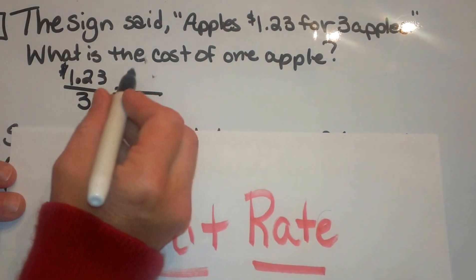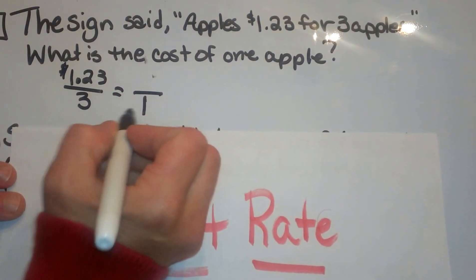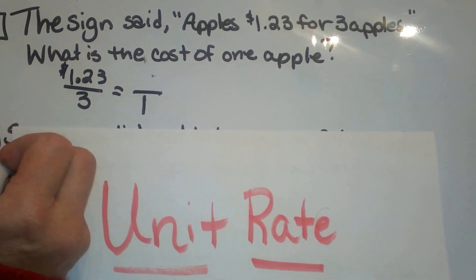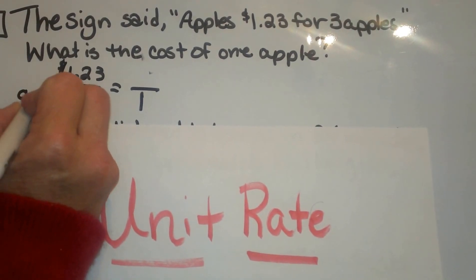In unit rate you are trying to find the cost of one. So we are going to put a one in the denominator because that represents apples on the bottom.